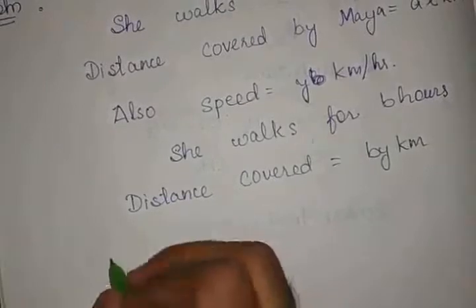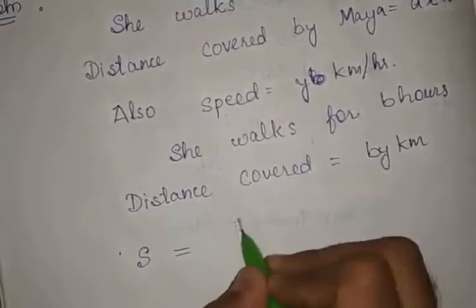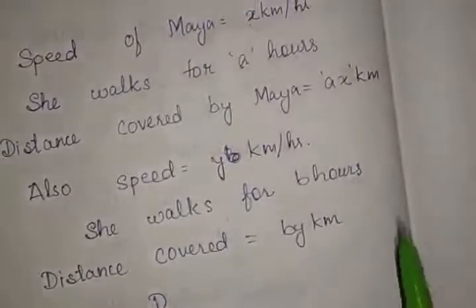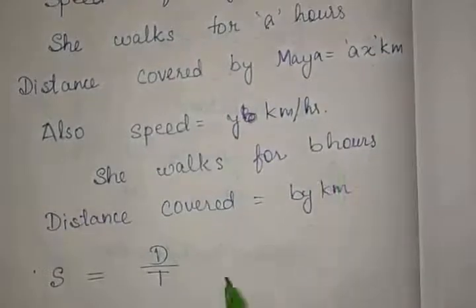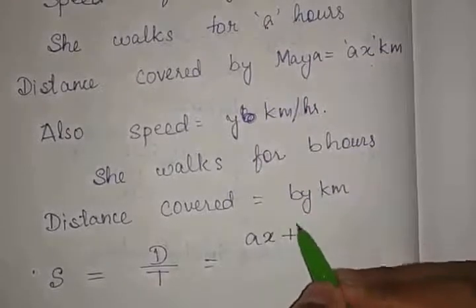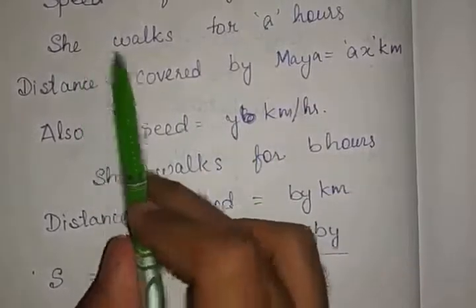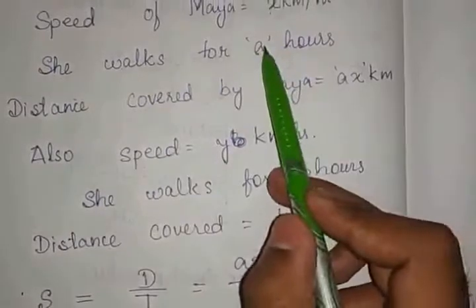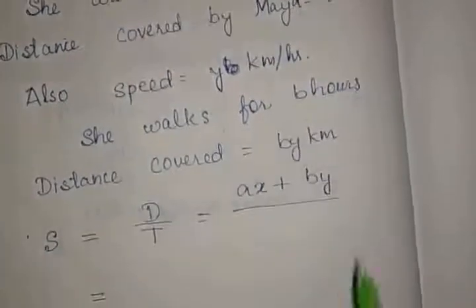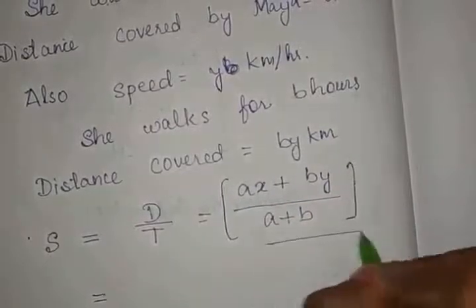We know that speed equals distance divided by time. The total distance covered by Maya is AX + BY kilometres. The total time is A + B hours. Therefore, the average speed of Maya is equal to (AX + BY) divided by (A + B).